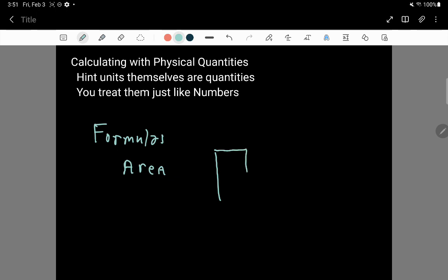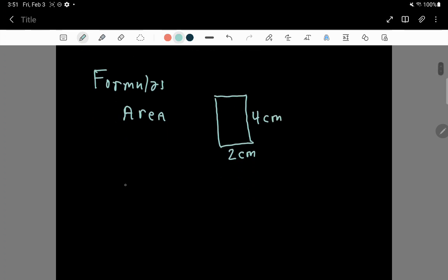Here is a rectangle that is, say, 2 centimeters wide and 4 centimeters tall. And the way you calculate the area is with a formula, so it looks like an equation. The way you calculate it is you take the width, in this case 2 centimeters, and you multiply by the height, which in this case is 4 centimeters.